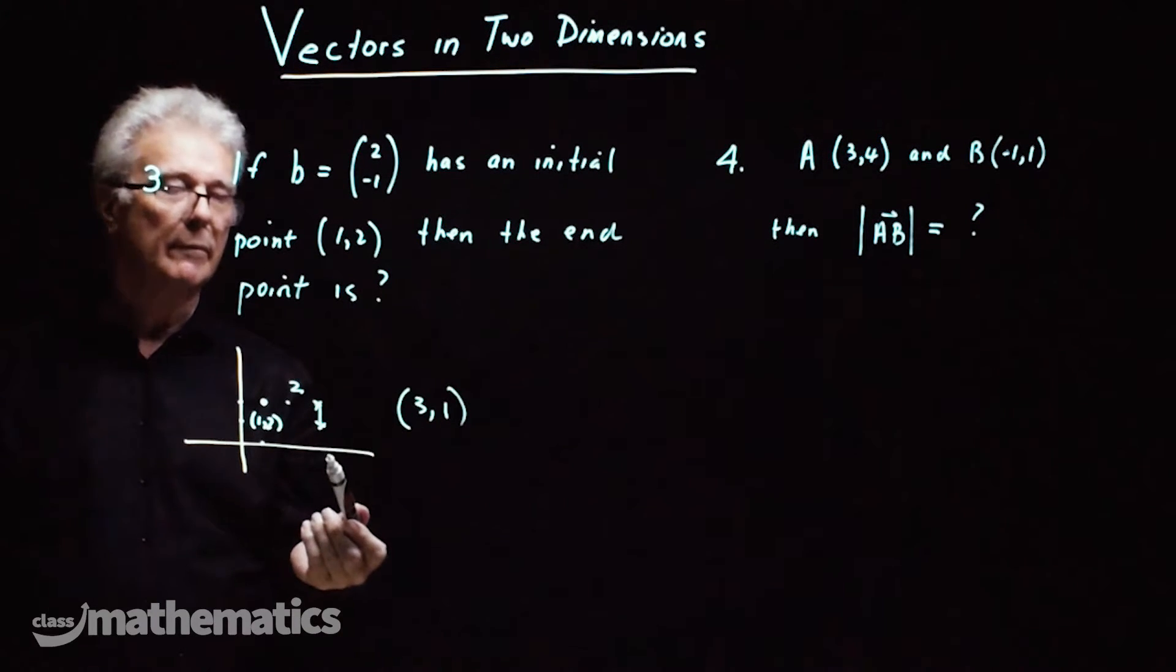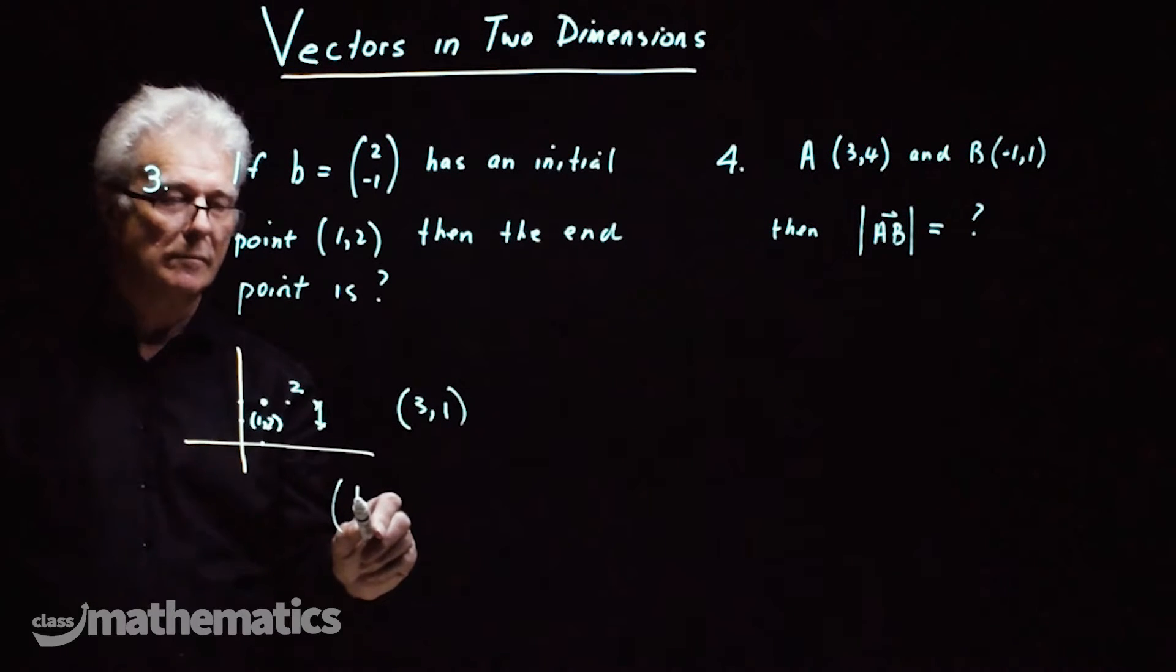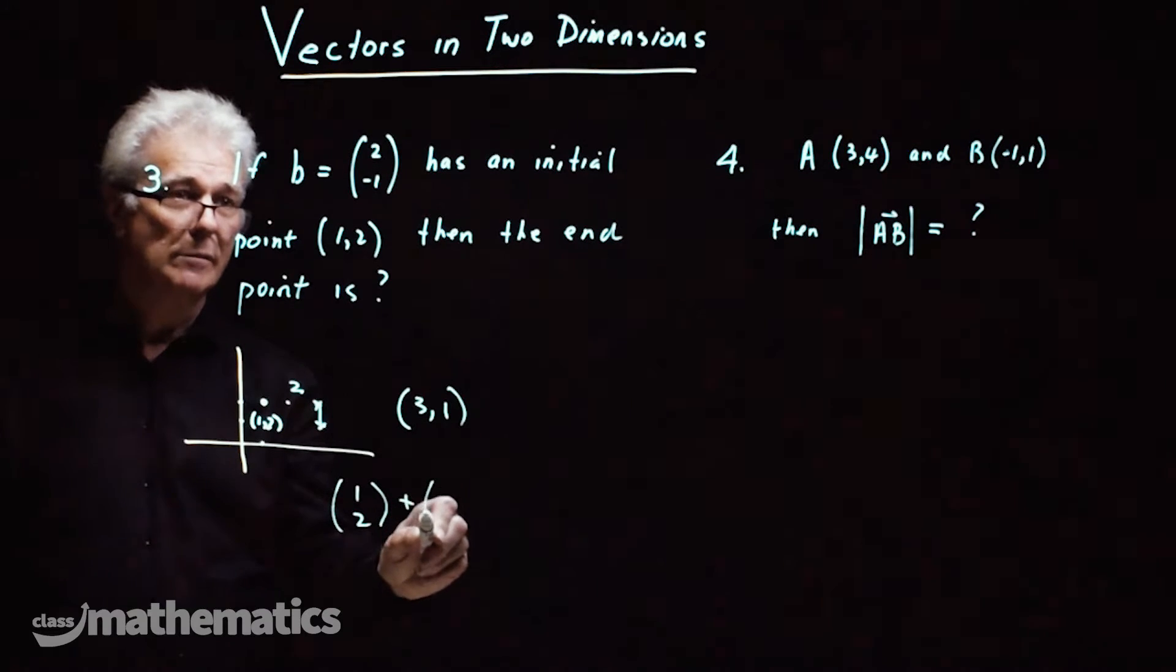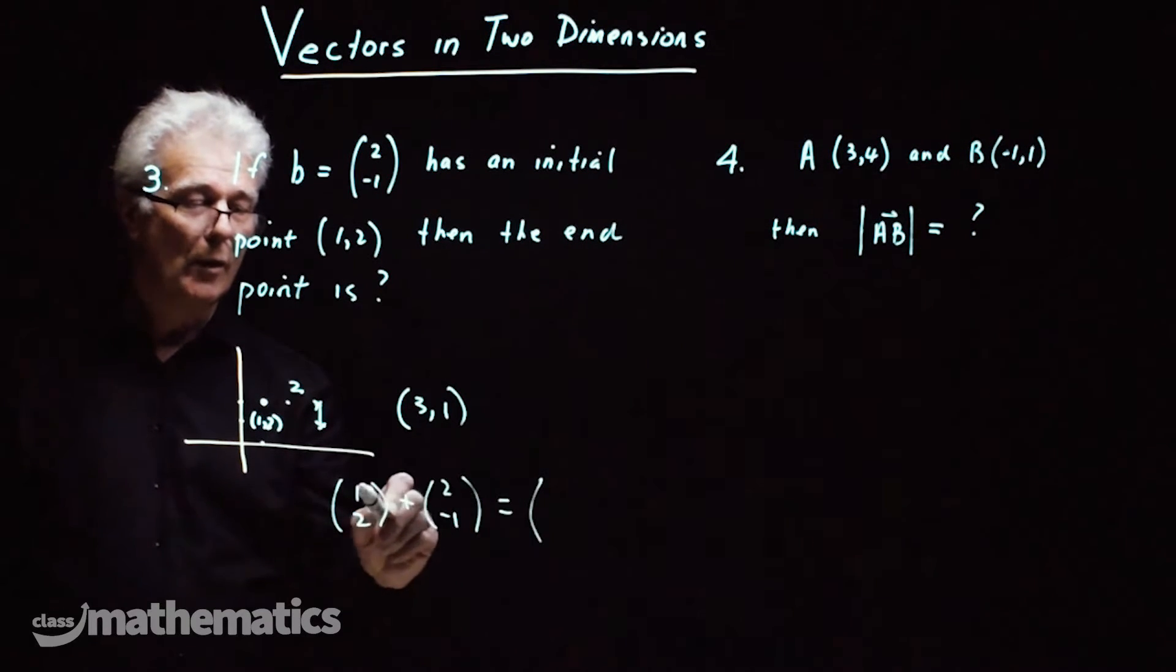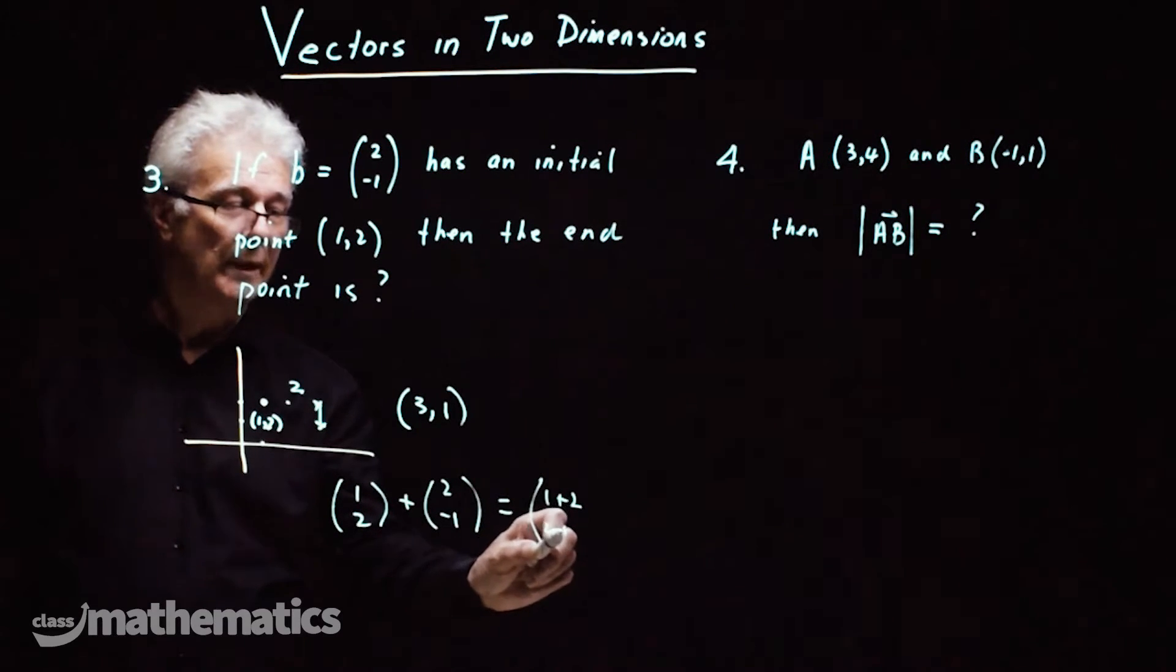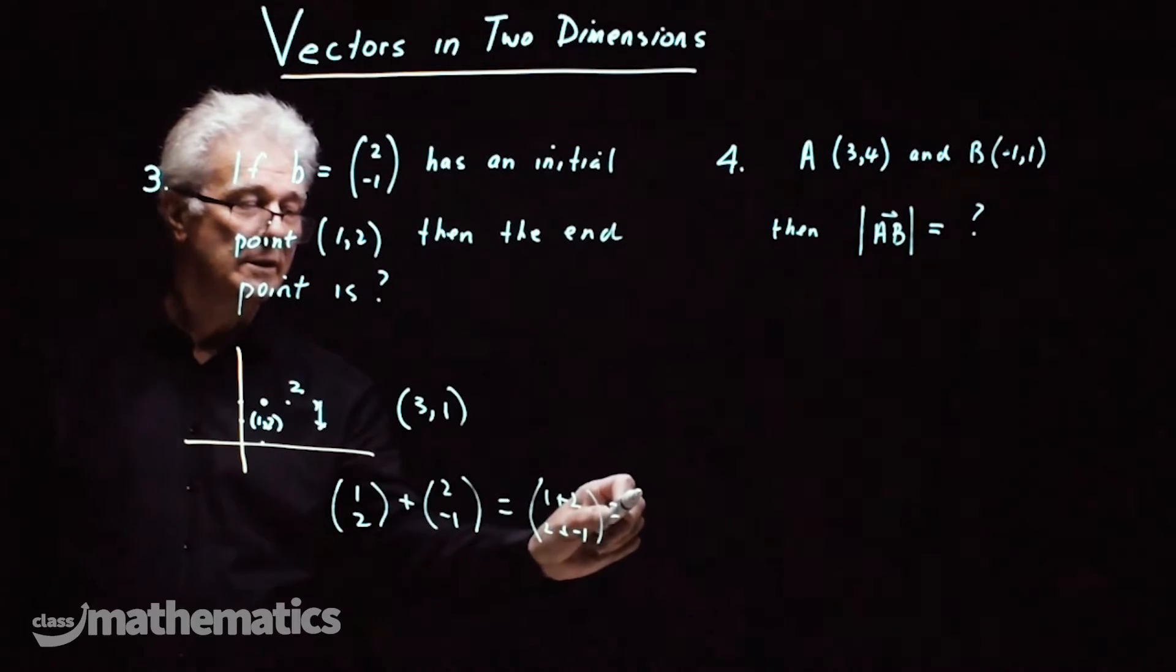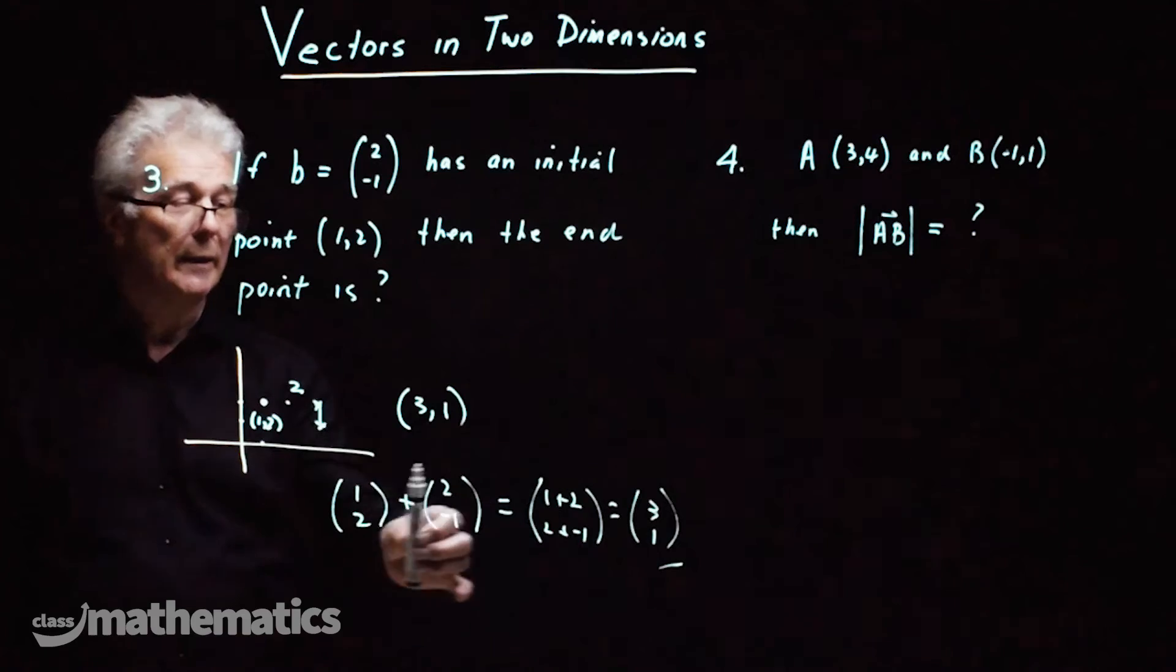Now using the column vector approach we're starting at 1, 2 plus 2, negative 1 which is 3, 1 as before. So you can see the approach is very quick.